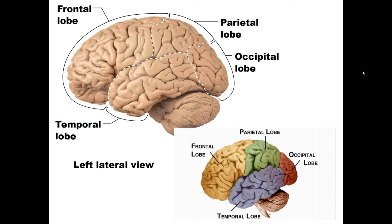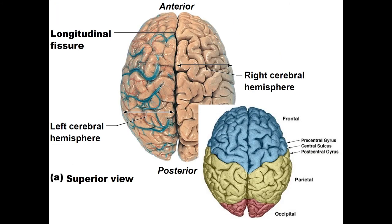The cerebrum's regions are conveniently named after skull bones: the frontal lobe, parietal lobe, occipital lobe, and temporal lobe. A long crevice called the longitudinal fissure separates the two hemispheres. In addition to gyri and sulci throughout the brain, there are primary sulci and gyri associated with particular sensory and motor functions.